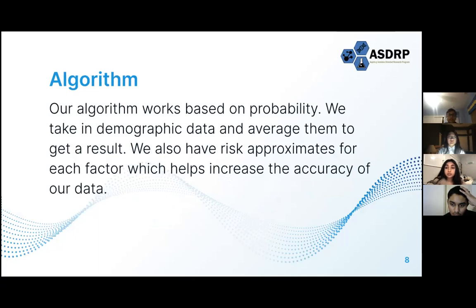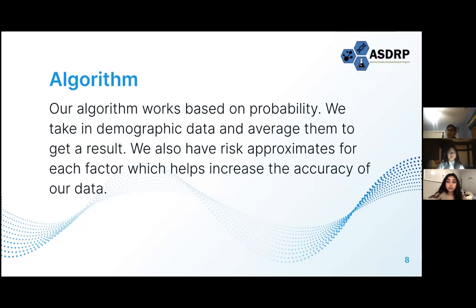Our algorithm works based on probability. We take in demographic data such as race, gender, and age, and for each factor we have a base risk approximate applied to each subsection. For example, if cases in California were 0.5 million and the U.S. has 22 million cases, Californians would have a 1 out of 44 chance of dying. With basic fractions for each subsection of risk, we created dictionaries and if-statements for each factor. The risk fractions are then averaged to provide a total risk of dying from COVID-19, and we use the standard deviation algorithm to increase the accuracy of our data.